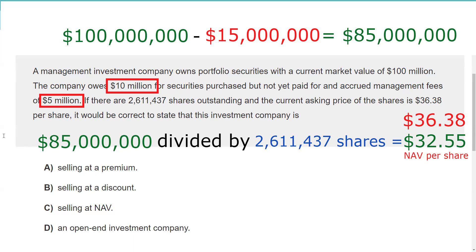You might ask: how do we know it's not an open-end fund? Could there be two right answers? Sometimes there could be two right answers and you'd get marked wrong if you don't pick the best one — but that's not the case here. We should know that the maximum sales charge for an open-end fund — very testable — is 8.5%. So let's verify: if this were an open-end fund, can we calculate the percentage sales charge?